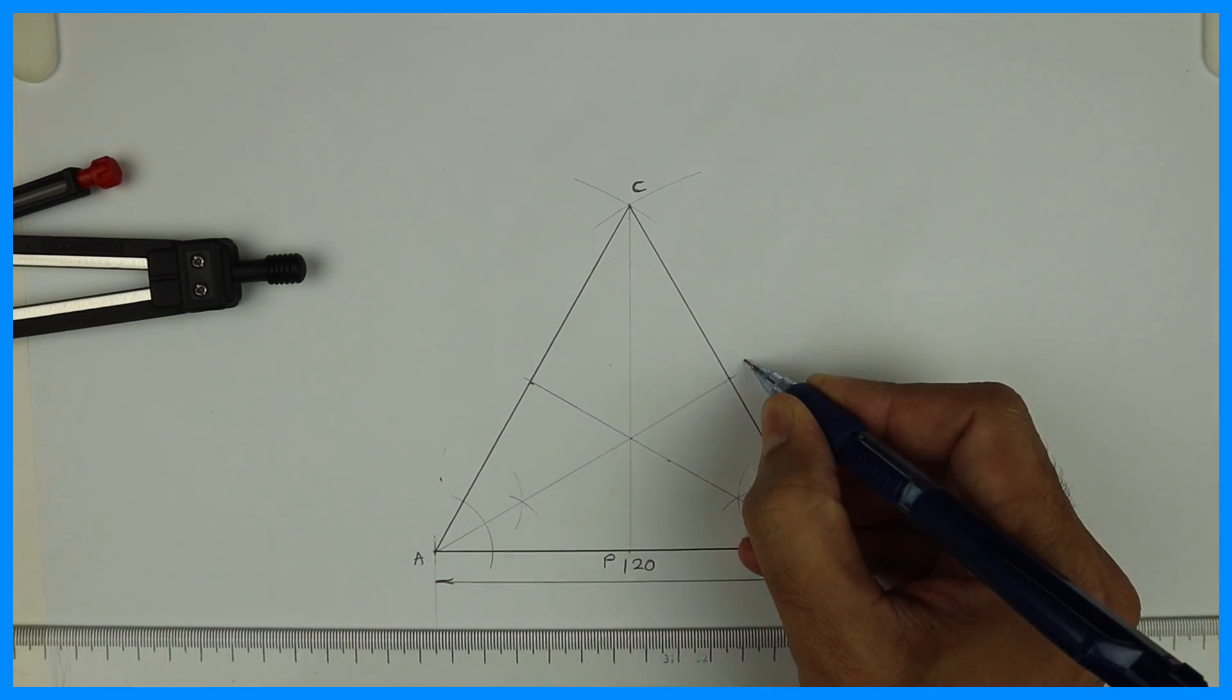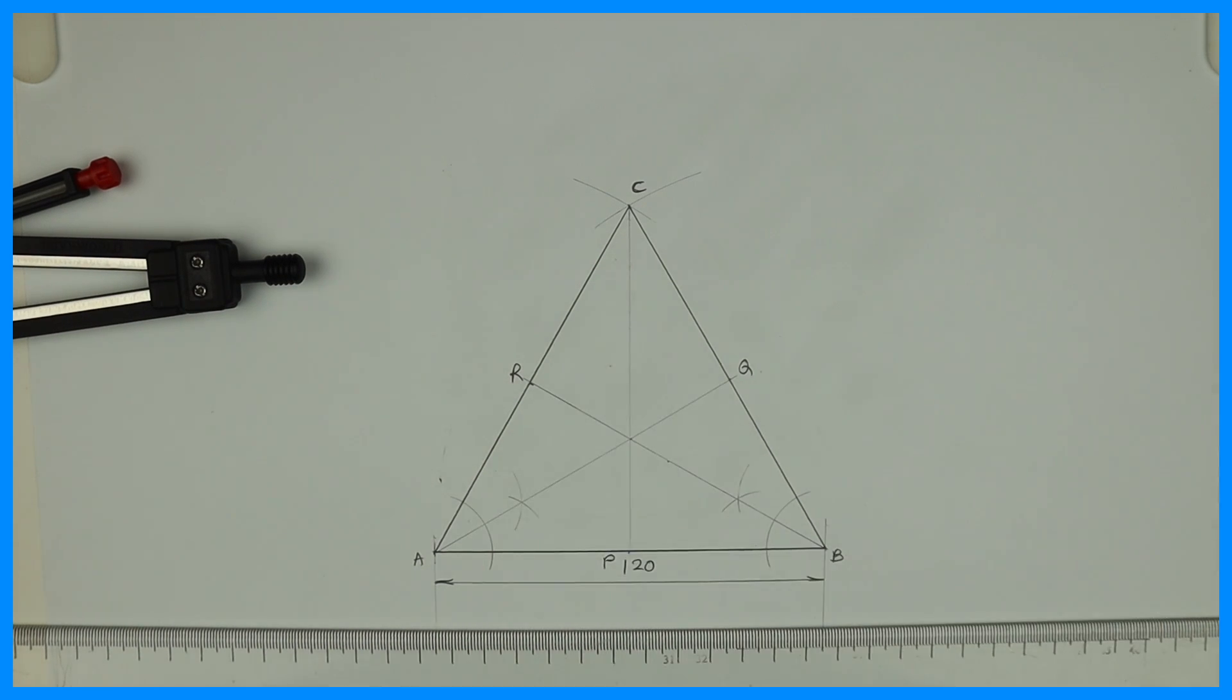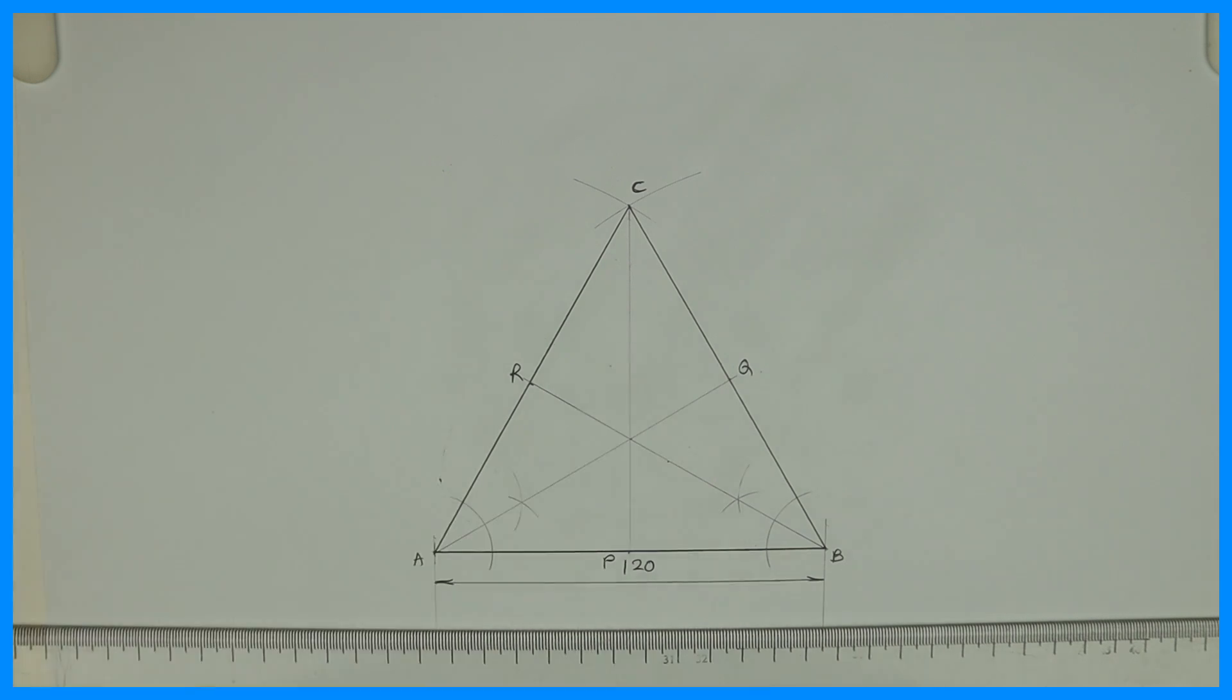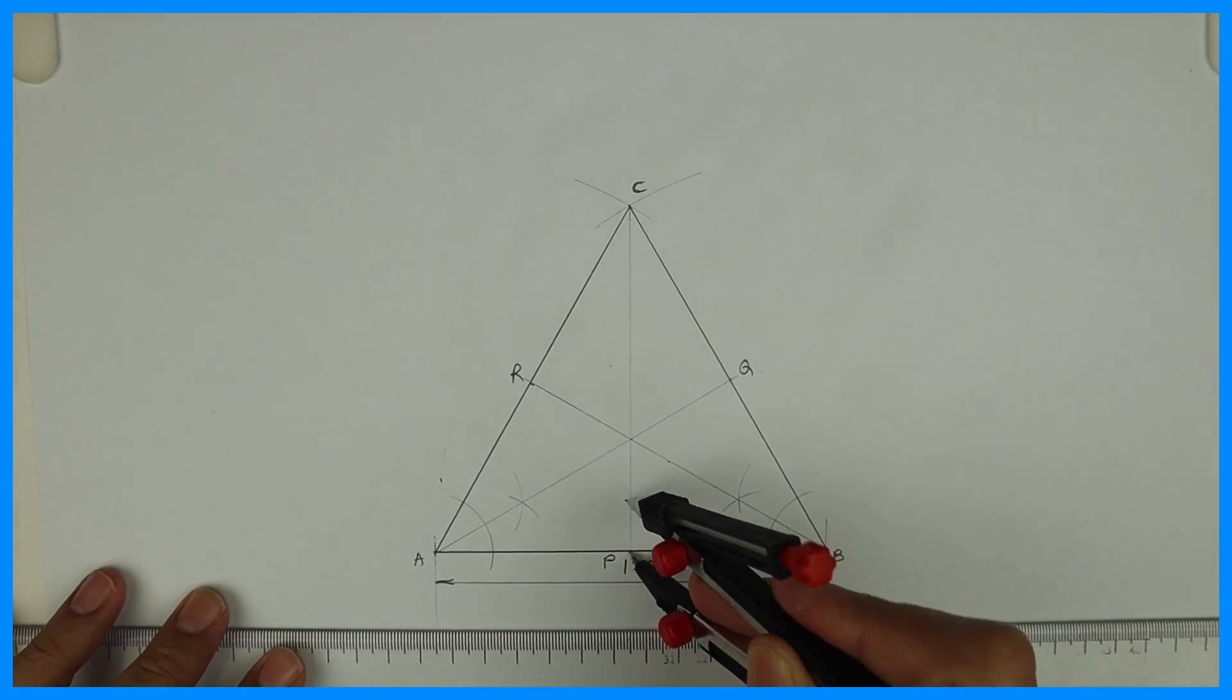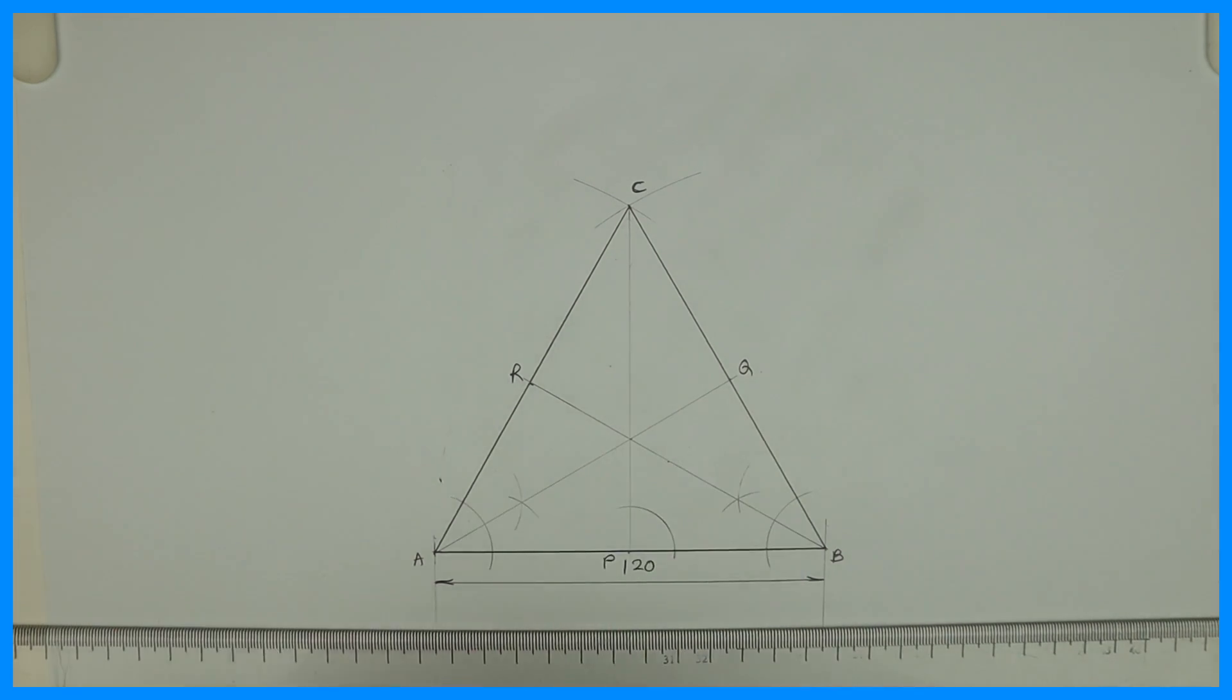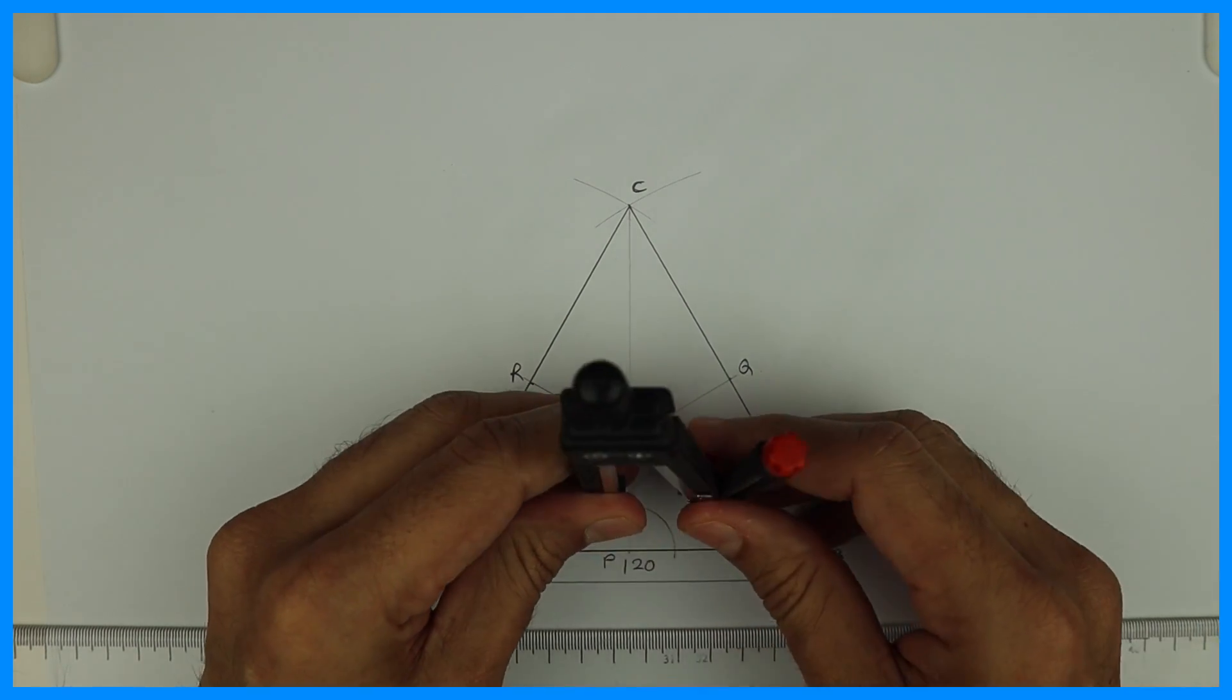See, this is P, Q, R. We'll bisect this angle CPB. It is actually 90 degrees—we can take directly 45 degrees also, or if you want to show construction, you bisect. So you bisect this angle CPB.